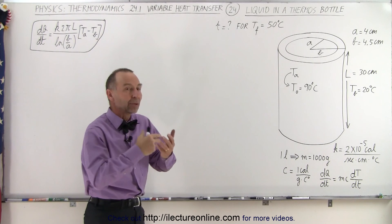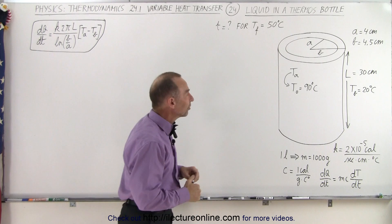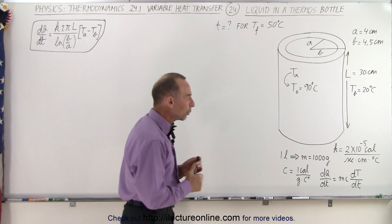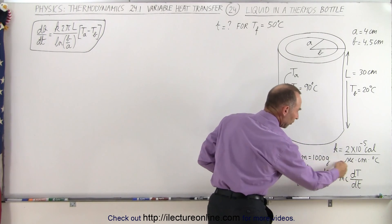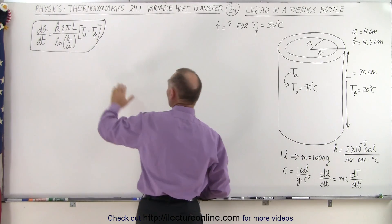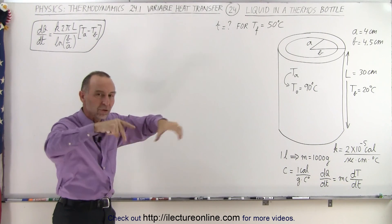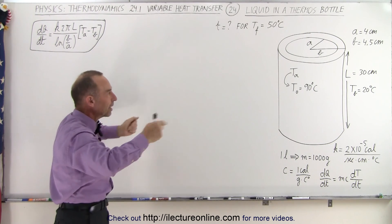How do we calculate the time that it will take for the liquid to go from 90 degrees centigrade down to 50 degrees centigrade? Well we're going to set this equation for the heat loss of the liquid, dq/dt, equal to this equation right here which expresses the amount of heat radiated across the insulating material from the inside to the outside.